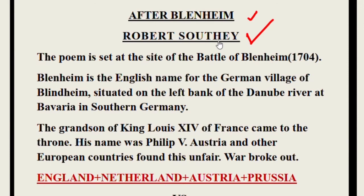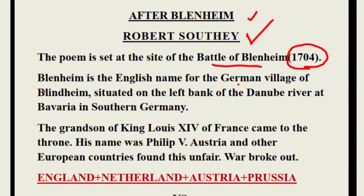The poem is set at the site of the Battle of Blenheim. Blenheim is a place where a battle took place in the year 1704. Blenheim is the English name for a German village. In Germany, the same place is known as Blindheim. It is situated on the left bank of the Danube River at Bavaria in southern Germany.